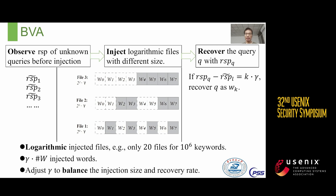Finally, in the recovery phase, for a target query q with response size RISP(q), we detect whether there exists a baseline RISP* such that RISP(q) minus RISP* equals key×gamma. If so, we can restore query q as W_key. Our attack has two characteristics: it requires only O(log |W|) injected files — for example, only 20 injected files are required for up to 10^6 keywords — and it requires gamma×|W| injected words. Secondly, our attack can dynamically adjust gamma to balance injection size and recovery rate.